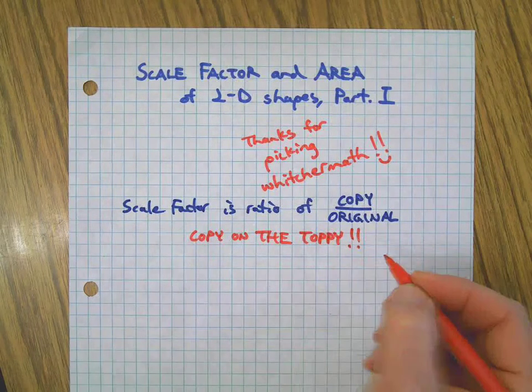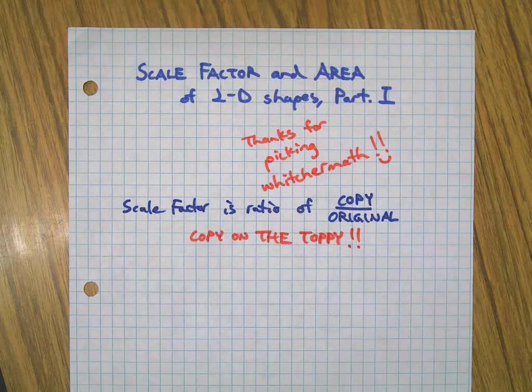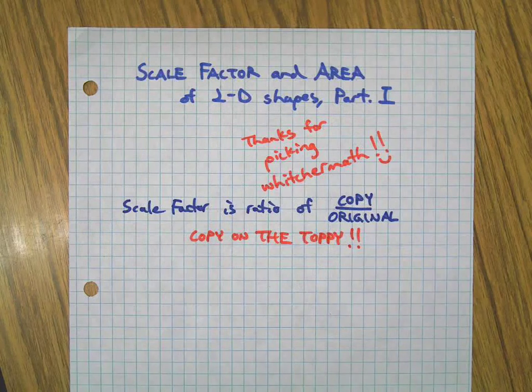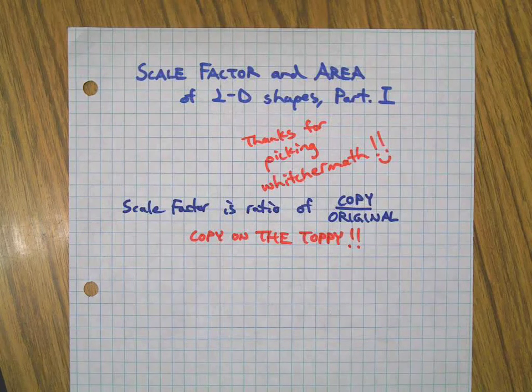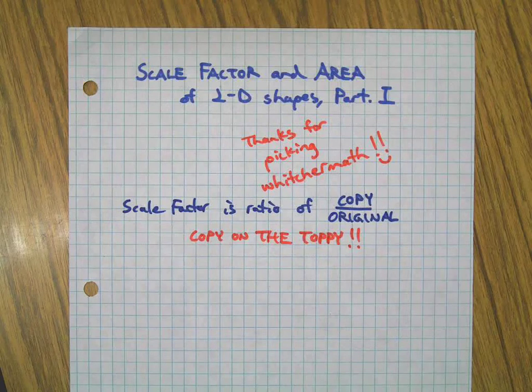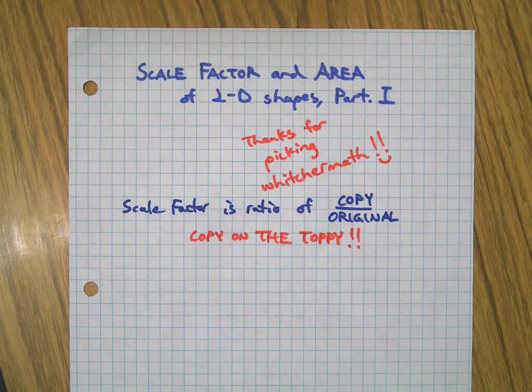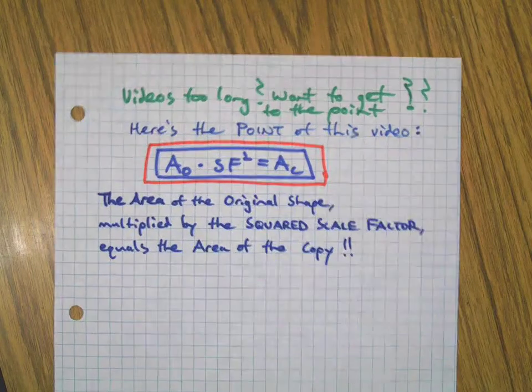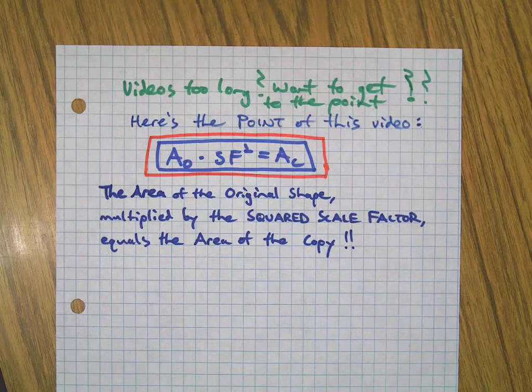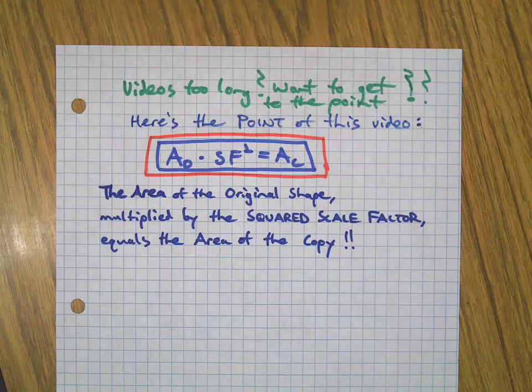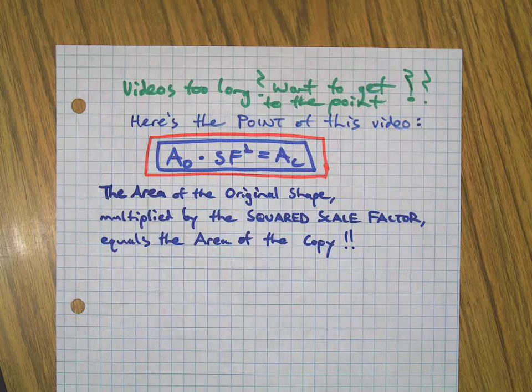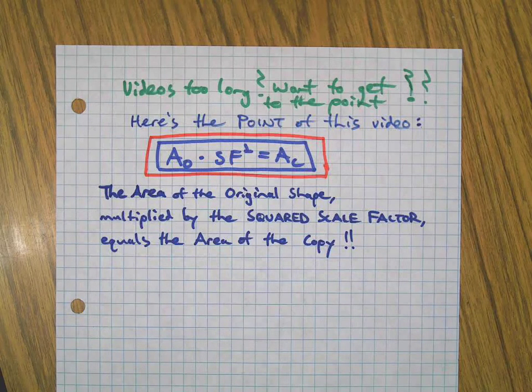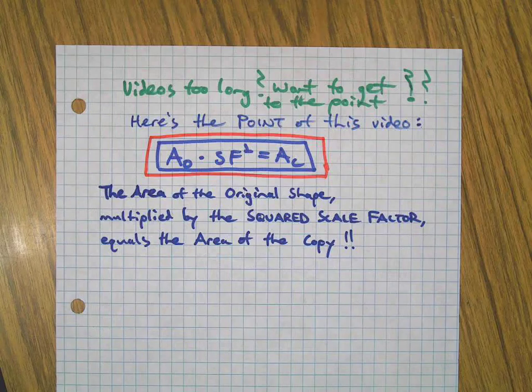You know what, some people think my videos are too long, there's too much stuff. Just get to the point, Mr. Witcher, I can't take it anymore! Okay, here's the point. Let's just get to the good stuff. The area of the original shape when multiplied by the squared scale factor is the area of the copy. There, that's the point. You just finished the video in a minute and a half, nice job!